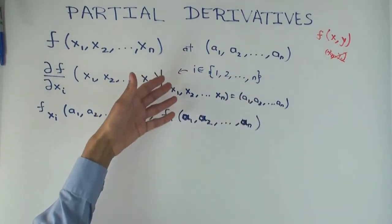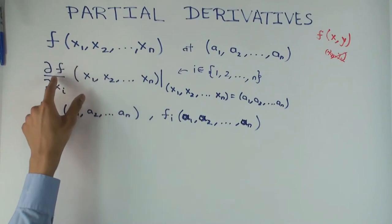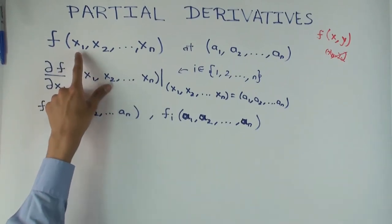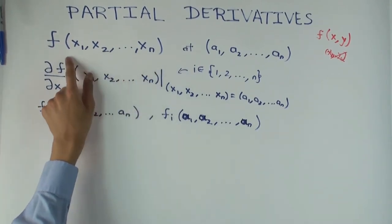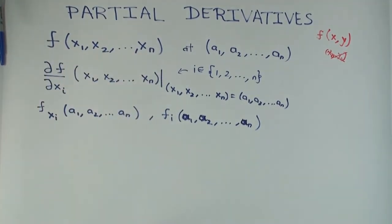And i here could be any number between 1 and n. In fact, for each value of i between 1 and n, you get a different partial derivative. So how many different partial derivatives do you get for this function? n. That's the number of inputs.